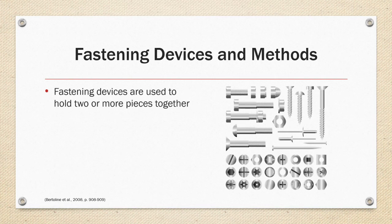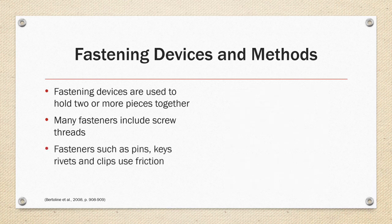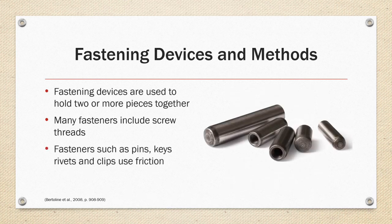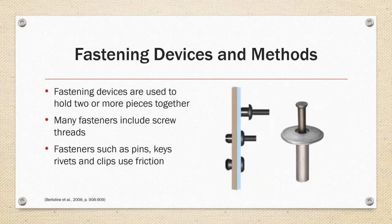Fastening Devices and Methods. Fastening devices are used to hold two or more pieces together. Many fasteners include screw threads. Fasteners such as pins, keys, rivets, and clips use friction instead of thread features for fastening.